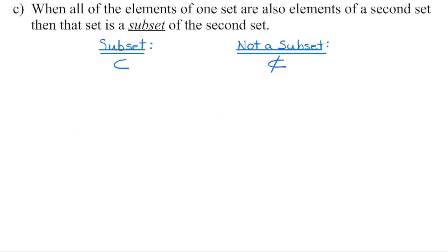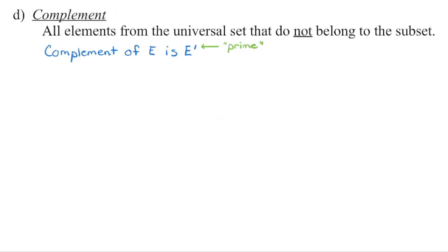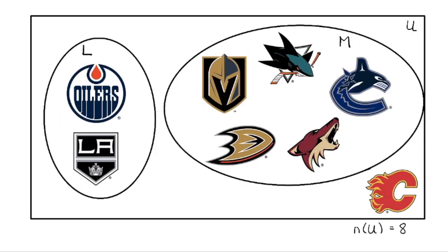This is the notation for 'not a subset.' We use the prime notation — that little tick mark — to indicate the complement. Every element that is part of the universal set but does not belong to that particular subset is called the complement, meaning it is outside of that set. Be careful, because it's just a tiny tick mark — every time you see it, think 'not.' So the elements not in set E. In this diagram, the Calgary Flames would be my complement: they are part of the universal set but not within one of my defined subsets.